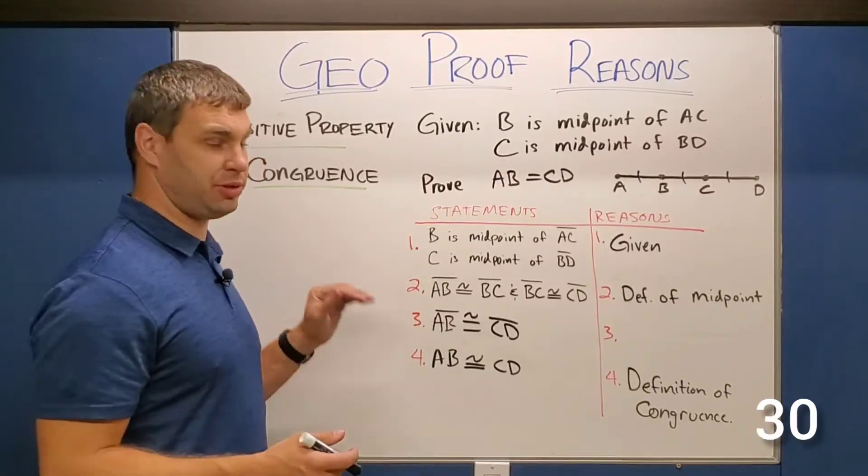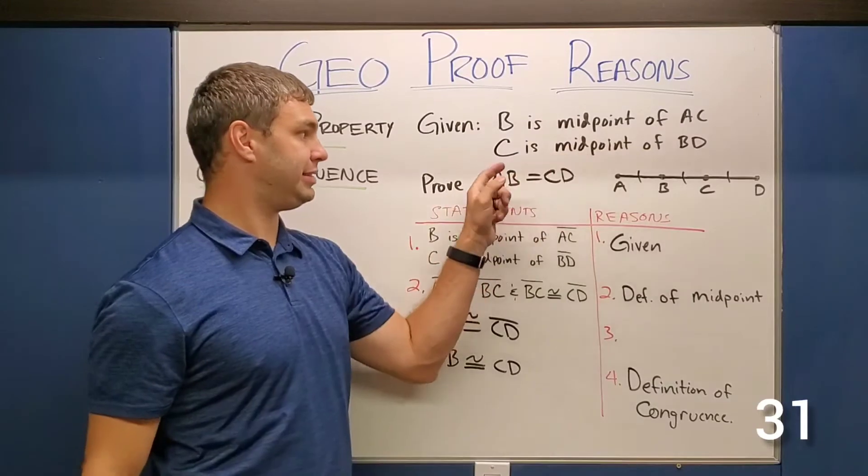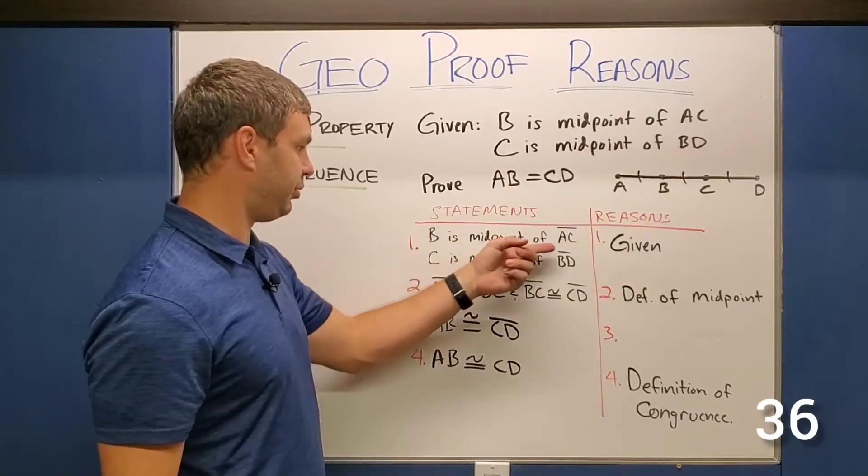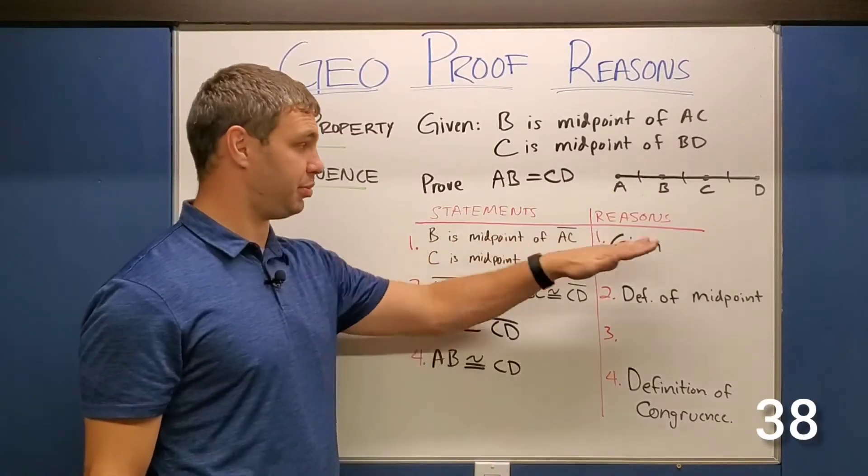All right guys, the first proof for transitive property says that B is the midpoint of AC, C is the midpoint of BD. We need to prove that AB equals CD. All right. We have B is the midpoint of AC, C is the midpoint of BD. Those are both are given to us.